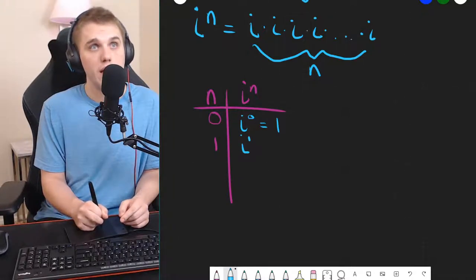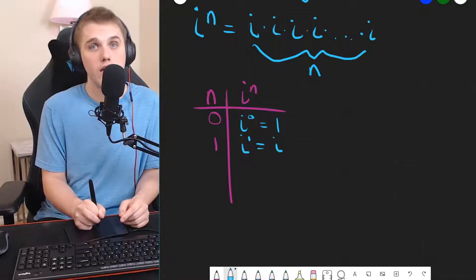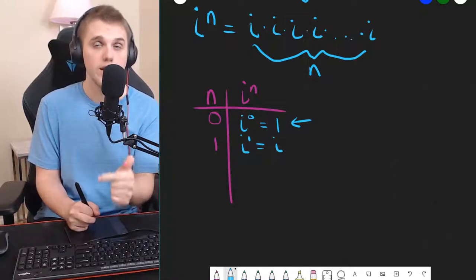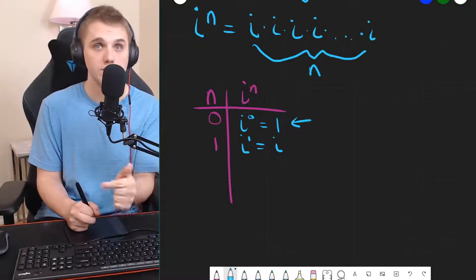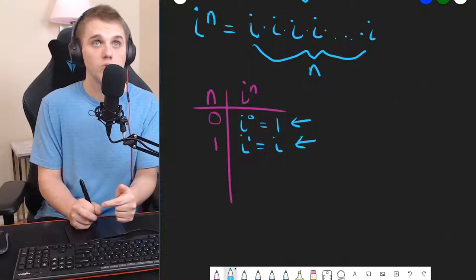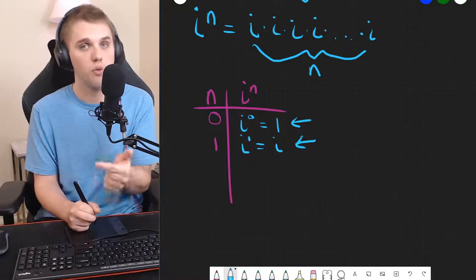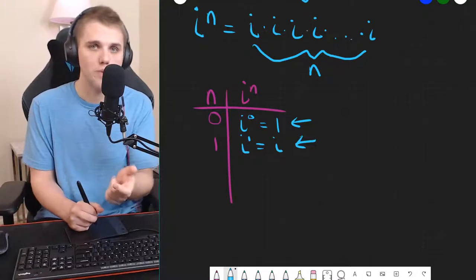What about when n equals 1? Well, i to the 1th power is i. So, here we have a real part that is 1, and an imaginary part that is 0. When n equals 1, we have a real part of 0 and an imaginary part of 1. Sort of swapped there.